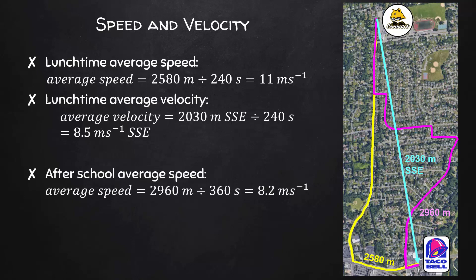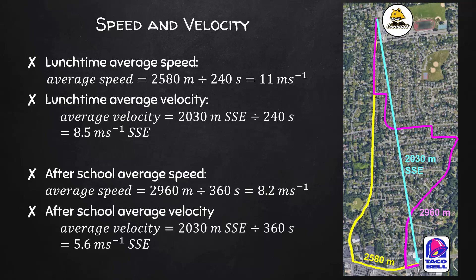After school, I drive a distance of 2,960 meters, and Google Maps says it should take about 6 minutes, giving me an average speed of 8.2 meters per second. Remember, regardless of which path I take, my displacement is going to be the same if I start and end at the same place. So after school, my displacement is still 2,030 meters south-southeast. Dividing by 360 seconds gives an after-school average velocity of 5.6 meters per second south-southeast.